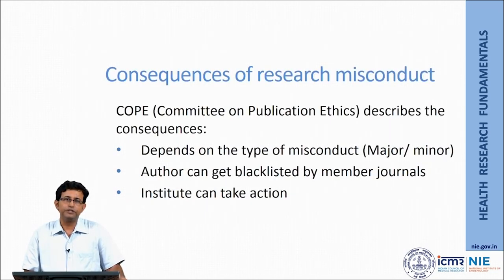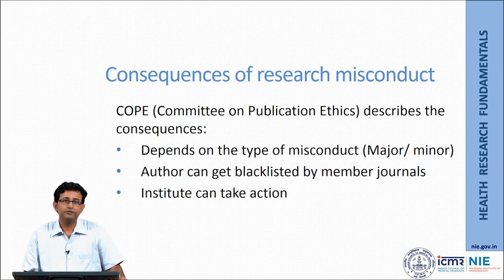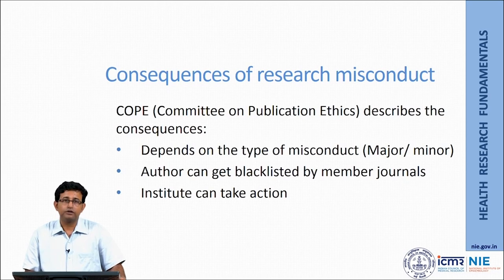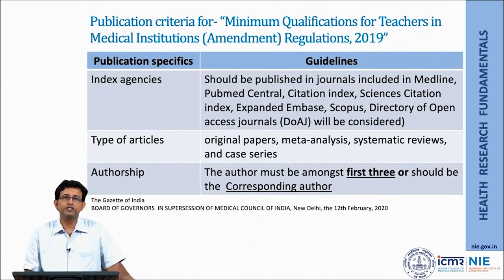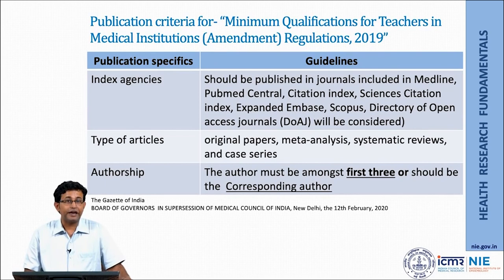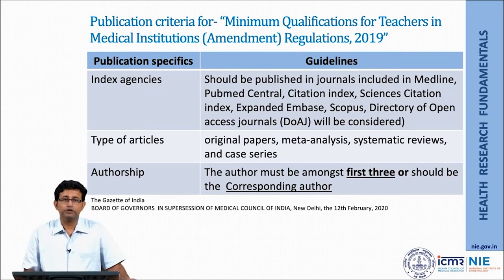Consequences of any research misconduct can be dealt with seriously. The Committee on Publication Ethics describes the consequences depending on whether the misconduct is major or minor. If found to be a major one, the author can even be blacklisted by all member journals, and the institute can be informed and can take action. I have summarized the existing guidelines related to publication for academicians in Indian institutions — what should be the index agencies, the type of articles, and the authorship criteria required for promotion and career progression.